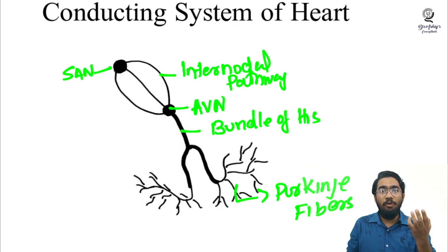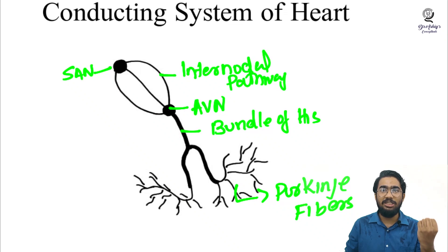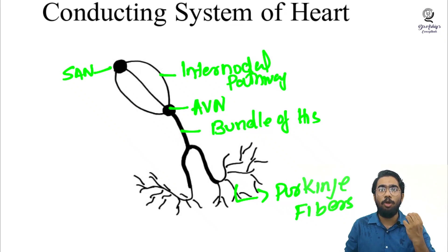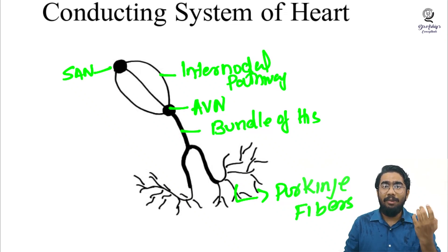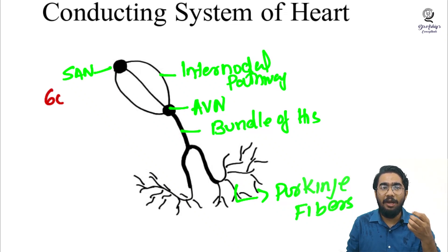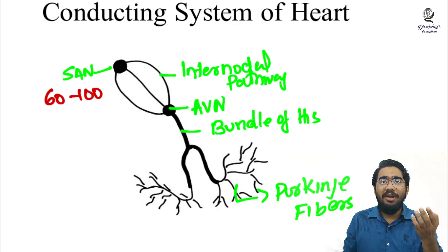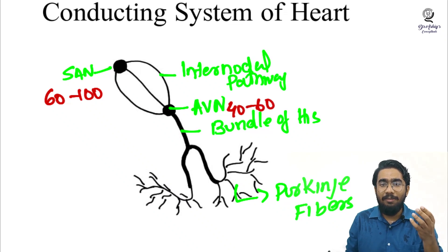Every part of the conducting system has the ability to generate signals automatically — we call this automaticity. However, each part has its own rate: the SA node produces signals at 60 to 100 per minute, the AV node at 40 to 60 per minute, and the Purkinje fibers at only 20 to 40 per minute.